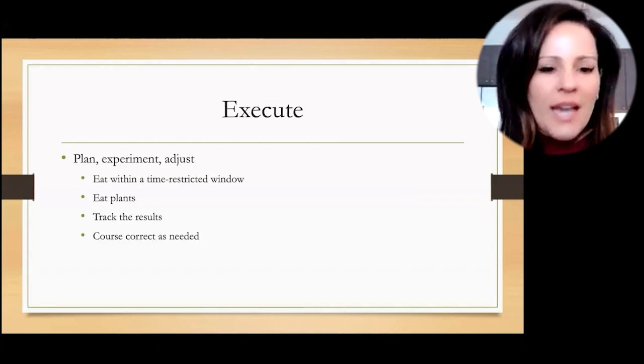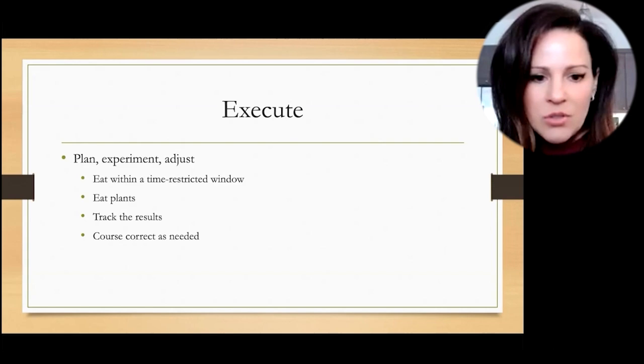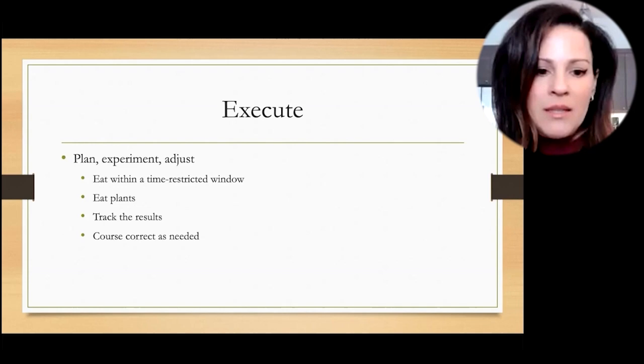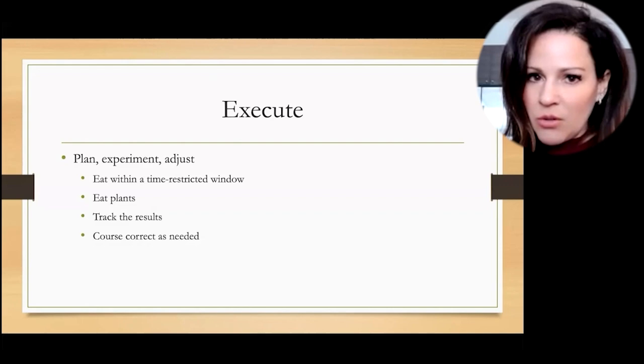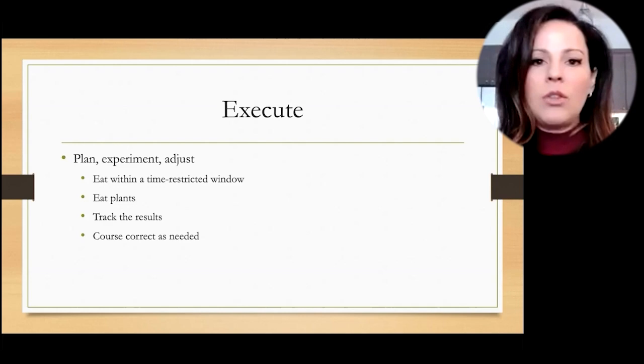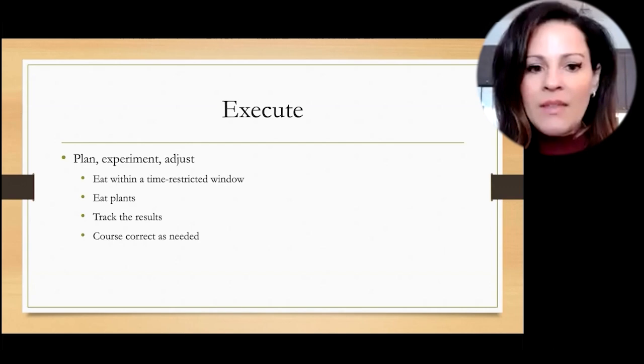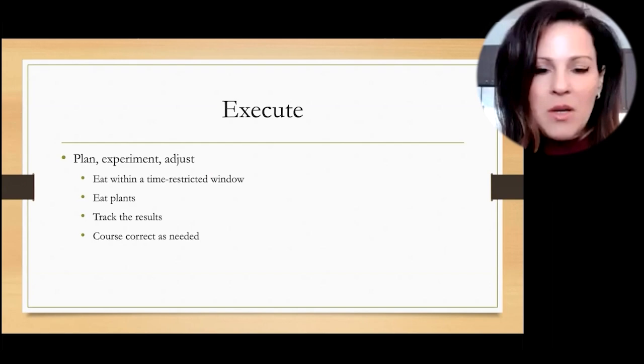Repetition is the mother of learning, the father of action, which makes it the architect of accomplishment. Everything about food is habit. Try new habits, create these new habits, tiny little habits that you repeat day after day, it becomes second nature and you get all of the results and it becomes automatized. So the next chapter in the book is Execute. It's basically that you eat within a time-restricted window, usually twice a day, whatever works for you. You eat whole plants and you track the results.